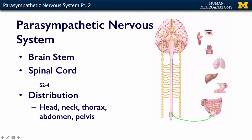The pelvic splanchnic nerves are going to innervate things like the bladder and the uterus or the prostate, depending on which one of those you have, and then the colon distal to the splenic flexure.